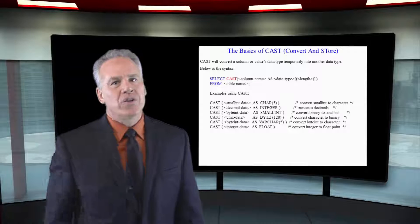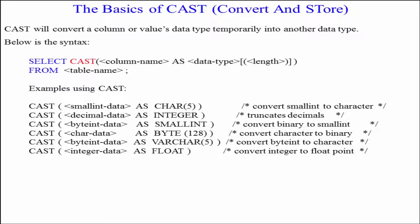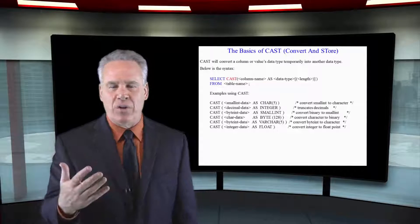Here's what we're going to show you. A few examples of what we might want to CAST to something else. For example, I might want to CAST a small integer of 2 bytes to character 5. I could CAST a decimal data as an integer. I would CAST byte data as a small integer. I'm going to CAST character data as a byte 128. I'm going to CAST some byte integer data as a varchar 5, or I might CAST some integer data as a float.